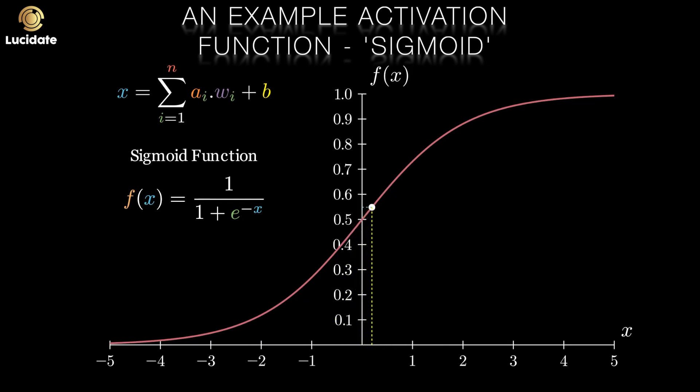This graphic shows an example of what is called a sigmoid activation function. One of the properties of this function is that it produces outputs that vary between 0 and 1. No matter how large the input, the maximum activation will be 1. No matter how negative the input, the minimum activation will be 0. The output of the sigmoid function is shown on the vertical axis and the input is on the horizontal axis.